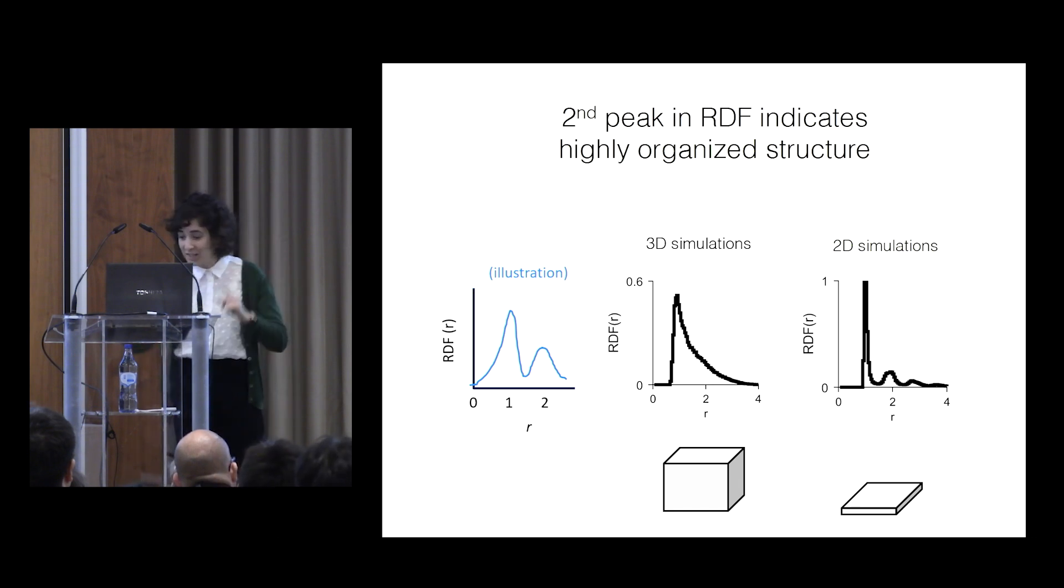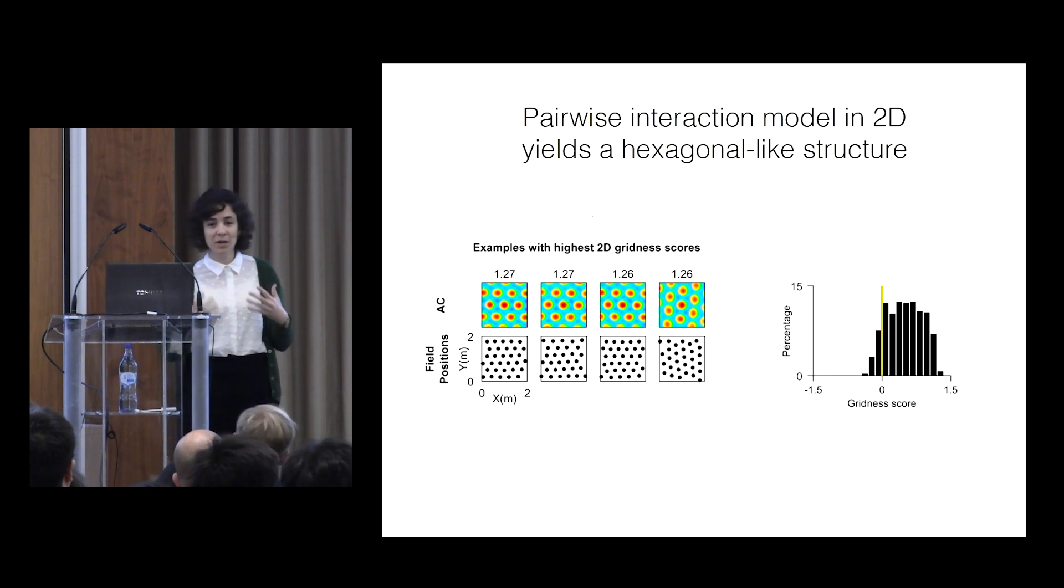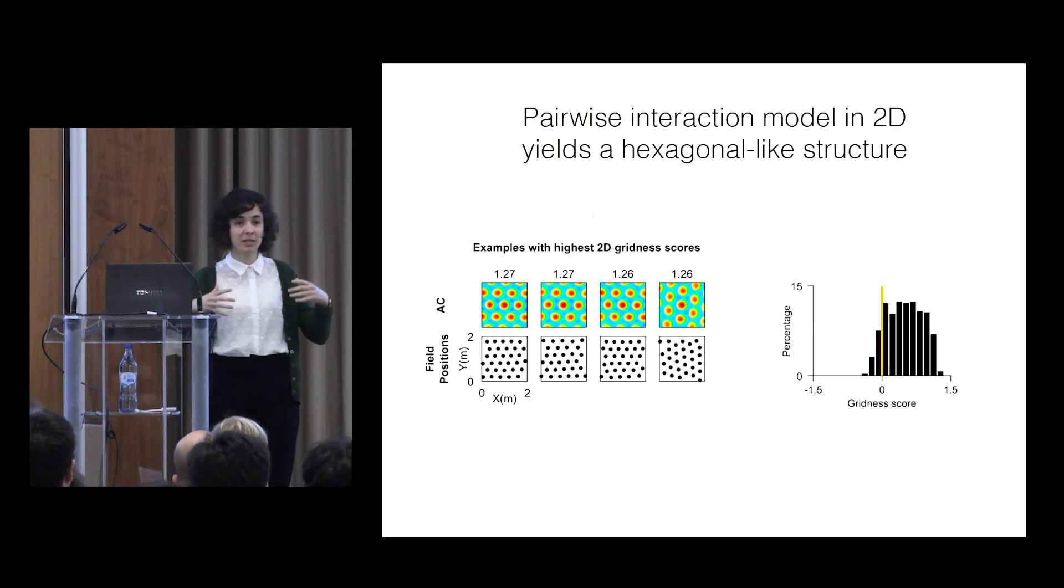So using the exact same model, the structures that come out in the 2D simulations are highly ordered. And I was surprised. Not only they're highly ordered, many times they're arranged in a hexagonal lattice arrangement. So you can see here the distribution of the gridness scores from 2D simulations. They're skewed to the right. We get high gridness scores.